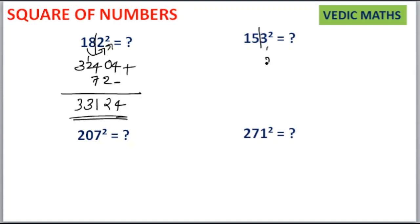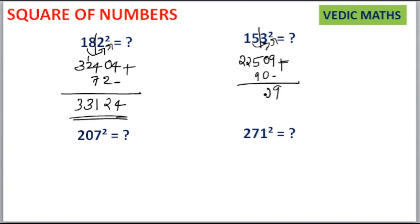Same way for 153: separate 15 and 3 as LSS and RSS. 3 squared is equal to 9 — write it as a 2-digit number 09. Then 15 squared is equal to 225. Then 15 into 3 is equal to 45, and 45 into 2 is equal to 90. Leave the unit place, write 90 here, then add the terms. Your answer is 23409.